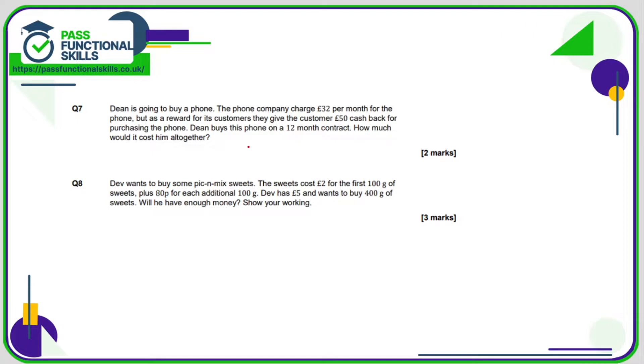Question number 7, so here it's cash back, so we're going to subtract £50 from the overall price. So the overall price is going to be 12 months times £32 per month. That comes to £384. Take away the £50 cash back, comes to £334.